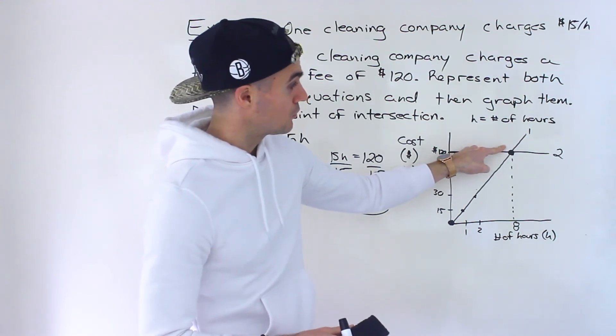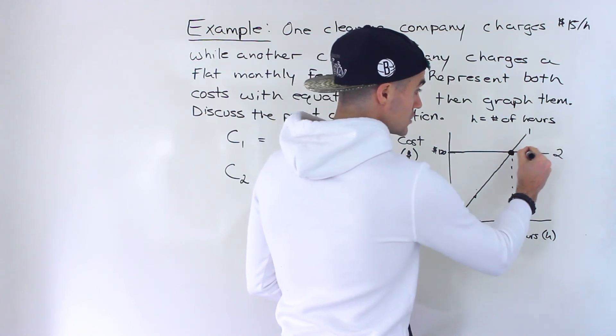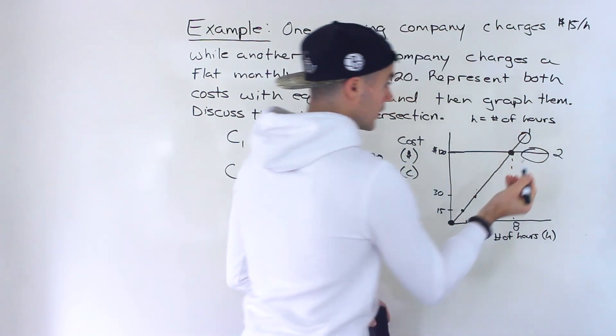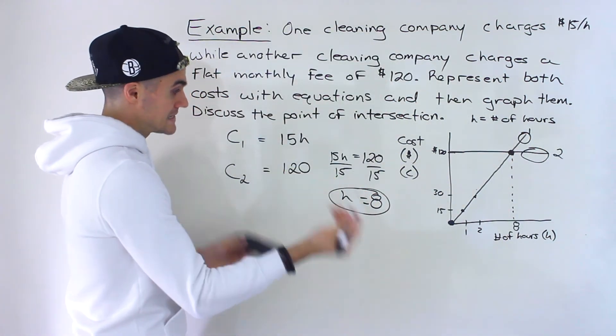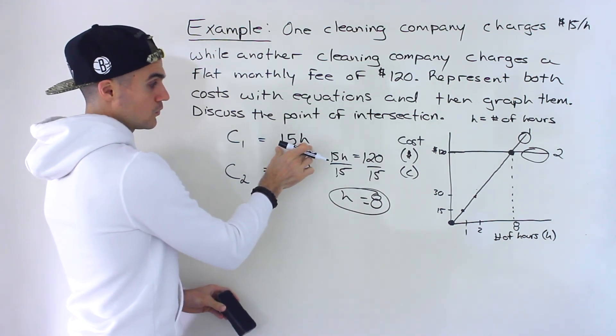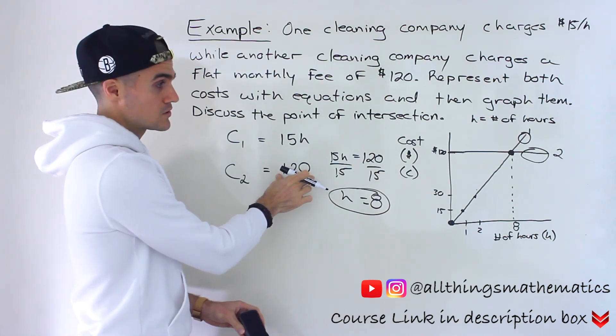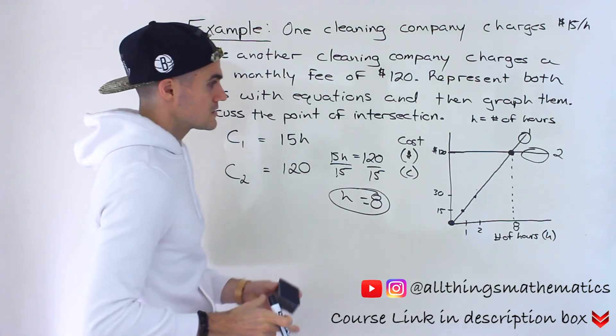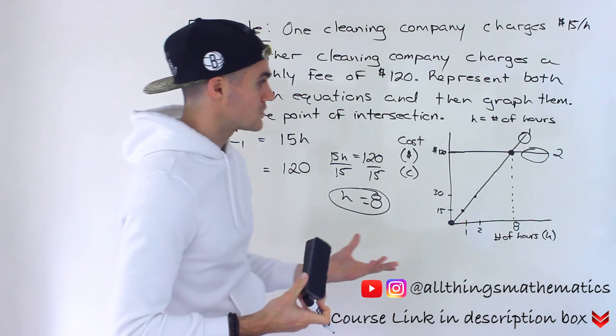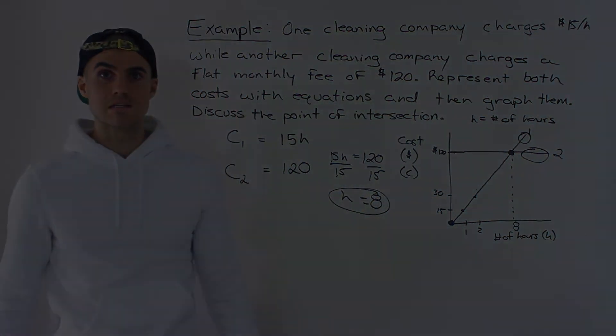At eight hours, they're both equal. And then over eight hours, then company two is going to be cheaper than company one. So for example, if we plug in 10, plugging in 10 over here, the costs would be 150 while over here would be that constant 120. So that's what that point of intersection means. It's basically when the cost of both companies is the same.